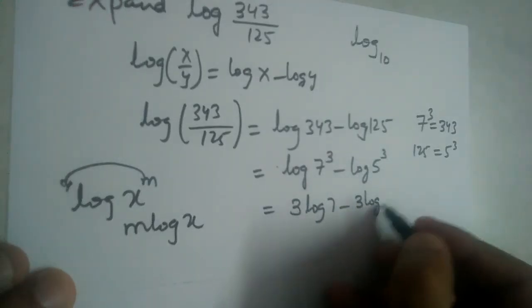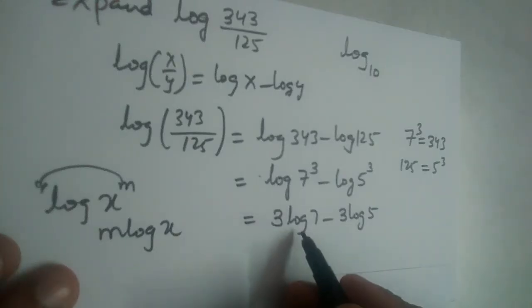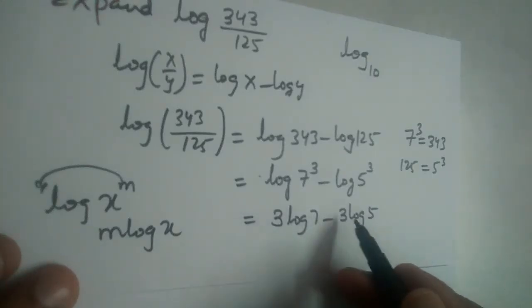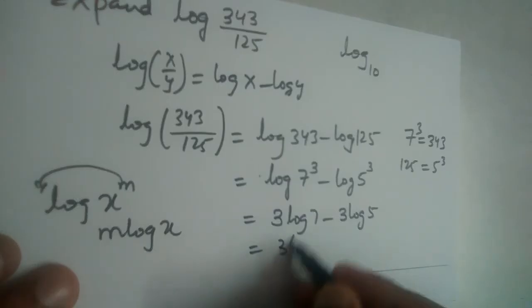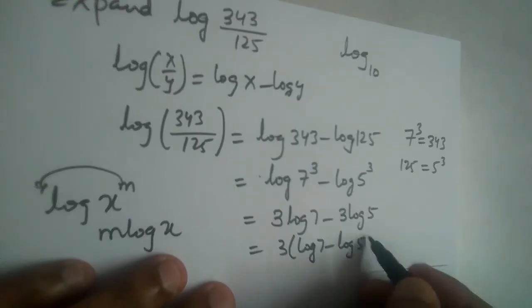From 3 log 7 minus 3 log 5, we can factor out the 3 as a common term and write it as 3(log 7 - log 5).